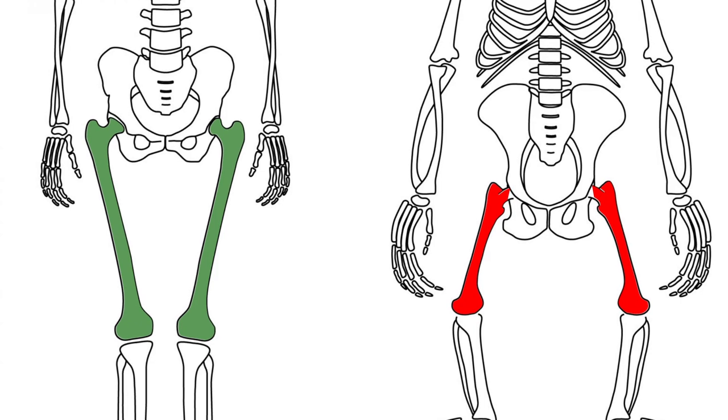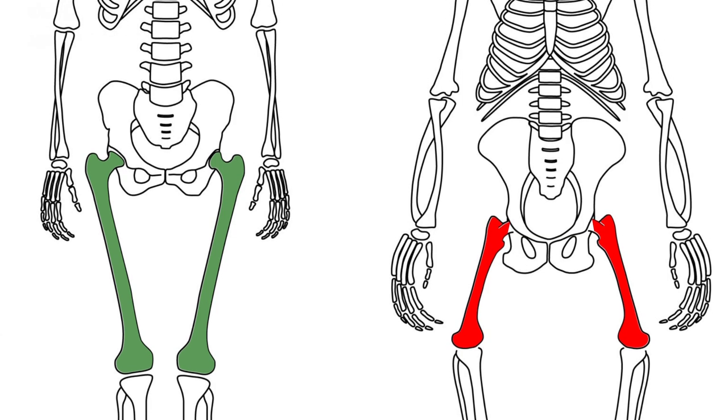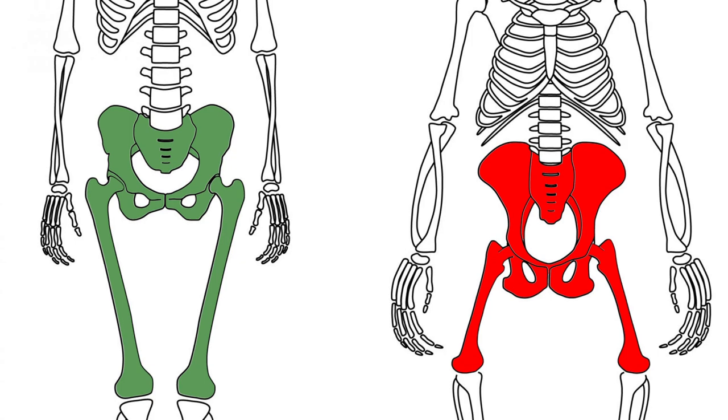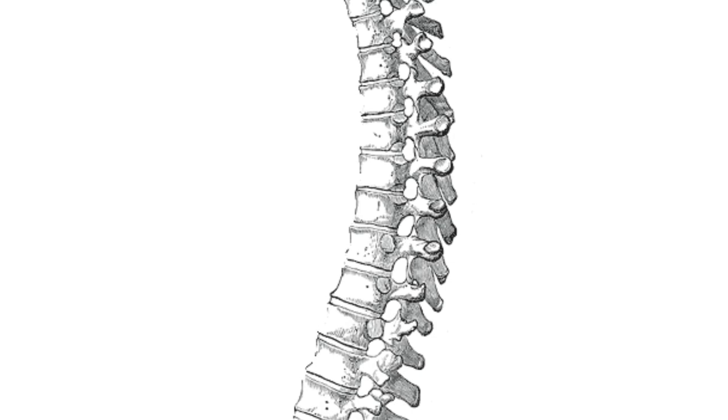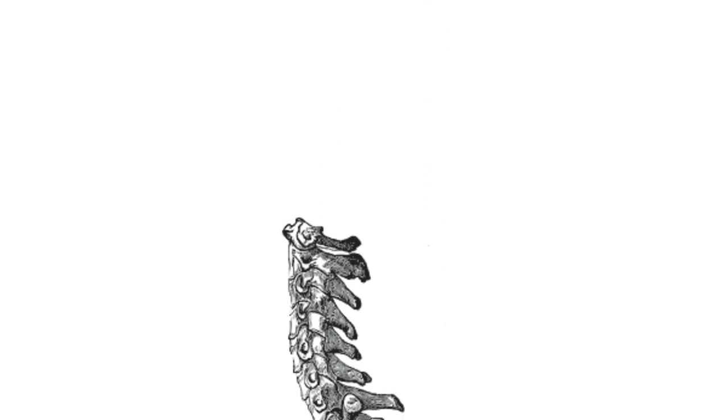This allows us to stand for long periods without getting tired, whereas apes can only stand for short periods. Our knees are enlarged and the pelvis is broader and more bowl-shaped so that they can withstand our body weight. Rather than being slightly curved, the human spine is S-shaped, helping to support our head and balance our weight directly over our hips.